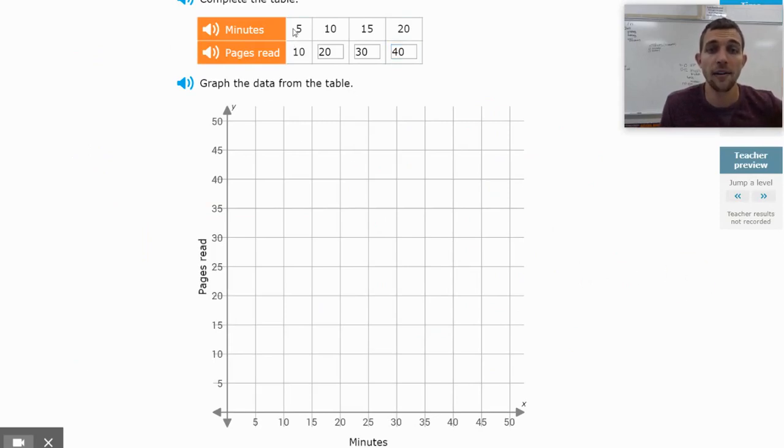We now need to take our table and put it onto the graph. Notice that minutes corresponds with the x-axis, and pages corresponds with the y-axis. If we have 5 minutes, then that is going to be 10 pages. So I go 5 over on the minutes, and then up to 10 on the pages. If I have 10 minutes, then that corresponds to 20 pages. So I go 10 minutes, and then go up to 20 pages. Notice again that this relationship is going to create a line pattern. If I have 15 minutes, that corresponds to 30 pages going up on what I read. And if I have 20 minutes, it corresponds to 40 pages.